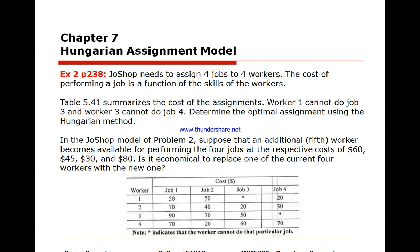In another example we have four jobs assigned to four workers, but we take into consideration that worker 1 cannot do job 3 and worker 2 cannot do job 4. To handle this, instead of placing a zero we place a large penalty value M, and treat it as M when subtracting from rows or columns. For a case with five workers and only four jobs, we add a dummy job with costs of zero for all workers and solve it as a normal matrix.